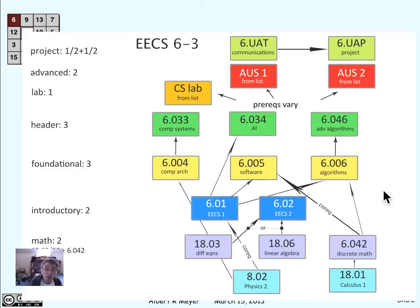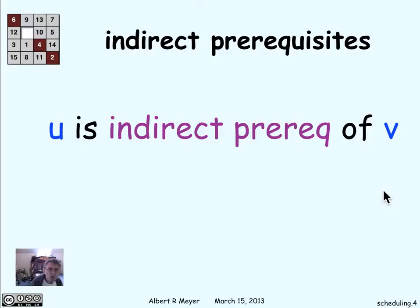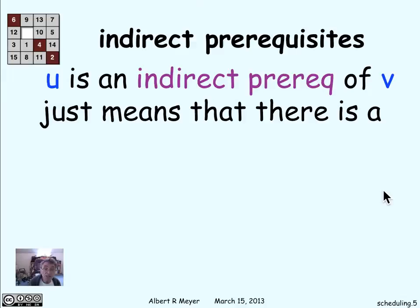It's simply a bunch of vertices — the course labels in rectangular boxes — and directed arrows showing catalog listings. When you're planning your coursework, you're really interested in the indirect prerequisites. So one class U is an indirect prerequisite of another class V means that there's a sequence of prerequisites starting from U and going to V. It means that you really have to have taken U sometime before you took V, and that's a crucial thing to take account of when planning a course schedule.